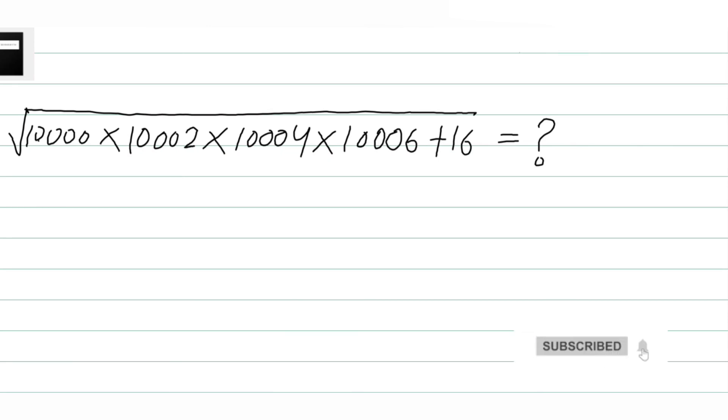Hello everyone, this one is from Hong Kong Mathematical Olympiad, which is a radical question. We have to simplify √(10000 × 10002 × 10004 × 10006 + 16) equals to what? We have to find out.